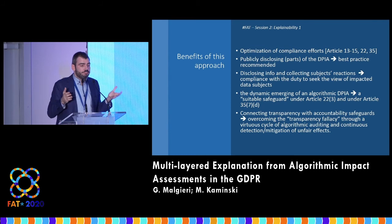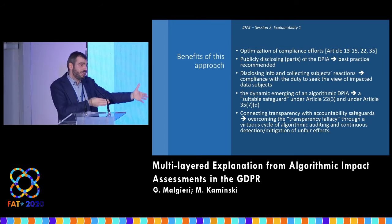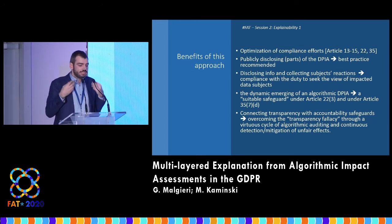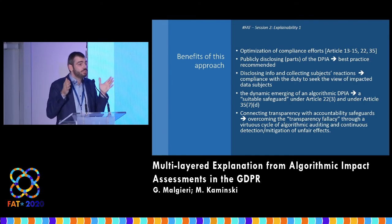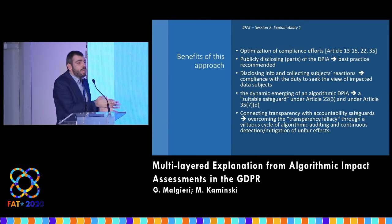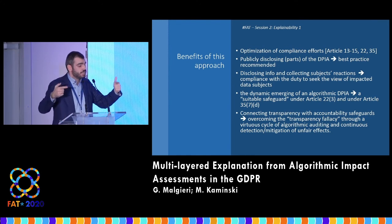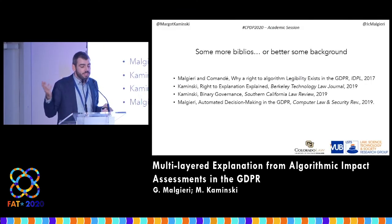The benefits of this approach: first, there is an optimization of compliance efforts — data controllers explain and assess risk at the same time. This is also a way to overcome the transparency fallacy, because making parts of the DPIA public is a way to justify — not just explain — the algorithm, justifying why risks to fundamental rights and freedoms of individuals are mitigated in that specific data processing. This tool can also be seen as a suitable safeguard under different points of view.